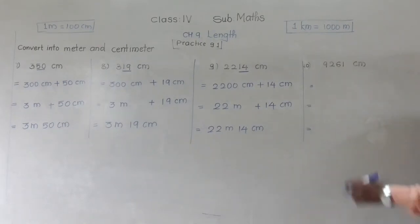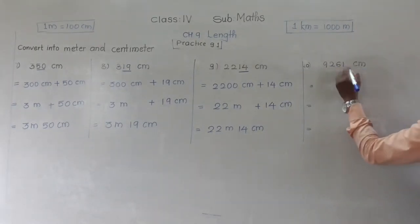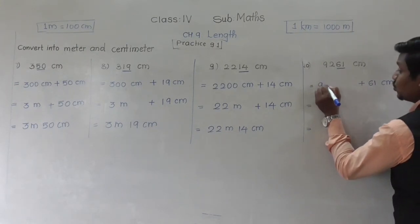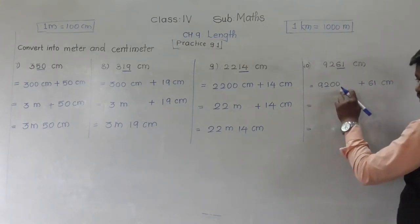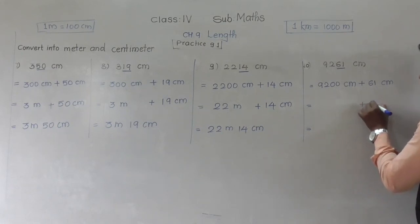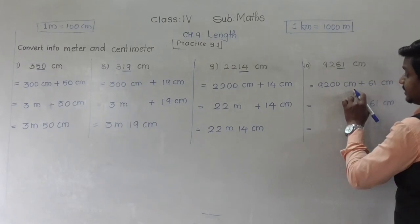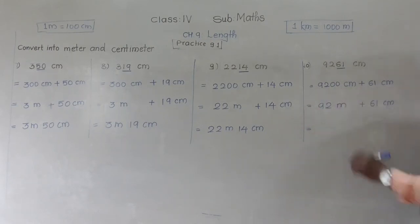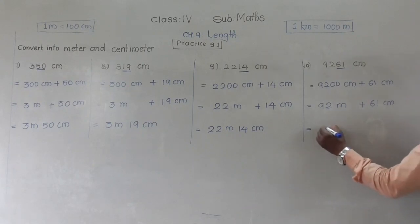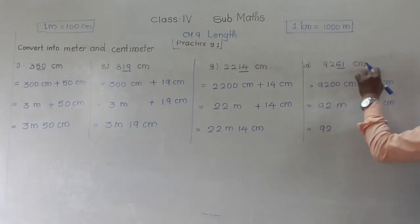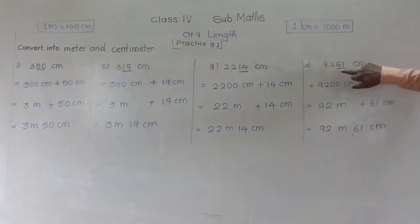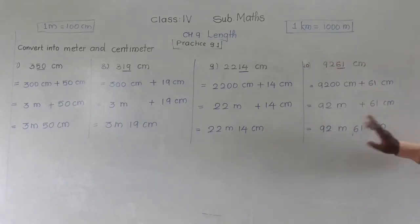Next: 9261 centimeters — underline the last two digits, which is 61 centimeters. The remaining part is 9200 centimeters — that is 92 followed by two zeros. The 61 centimeters stays as is. 9200 centimeters equals 92 meters because 100 centimeters equals 1 meter. So 9261 centimeters equals 92 meters 61 centimeters. In short: the number formed by the last two digits is your centimeters and the remaining number is your meters.